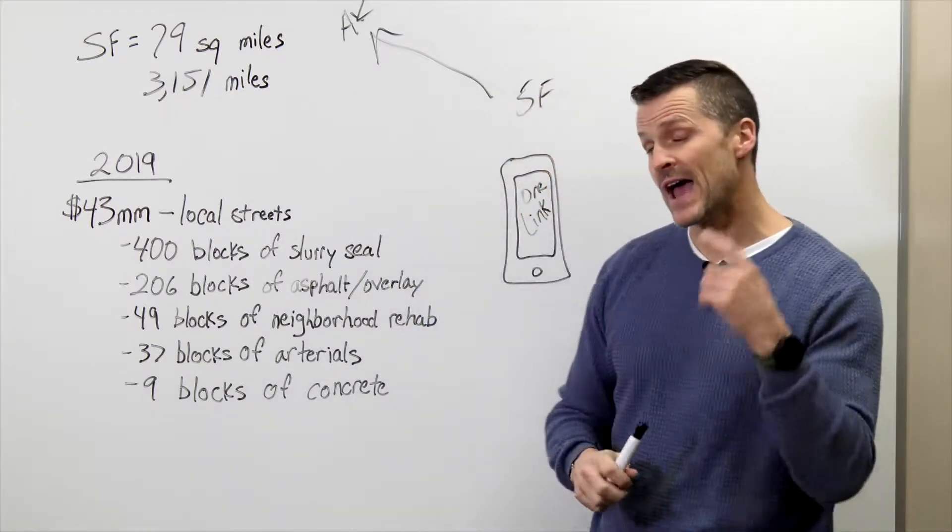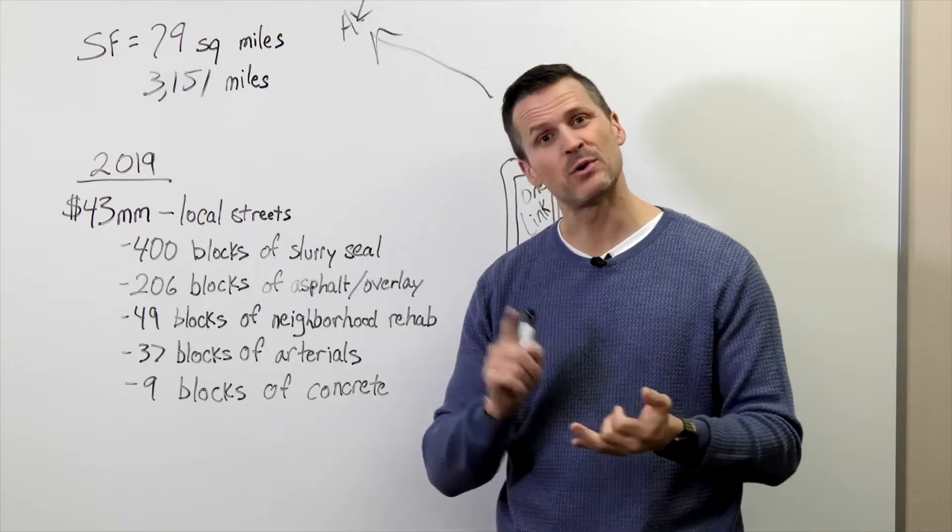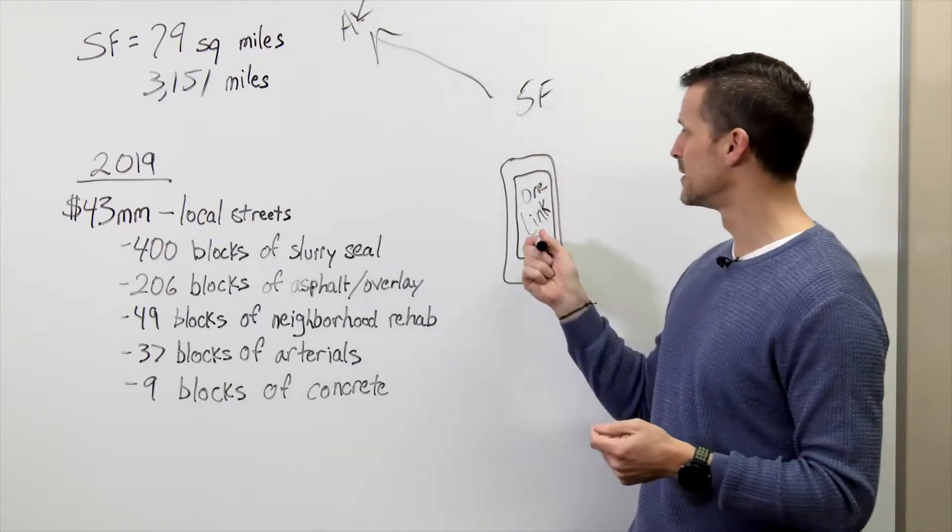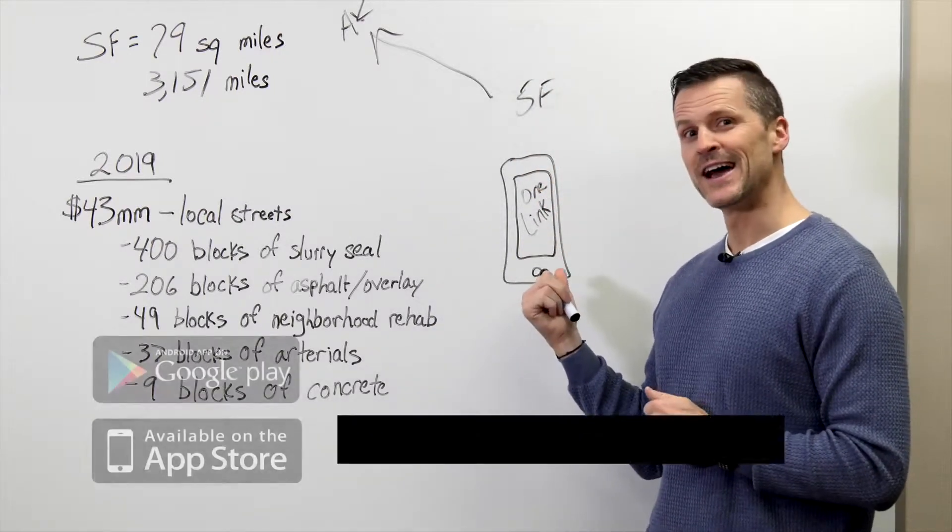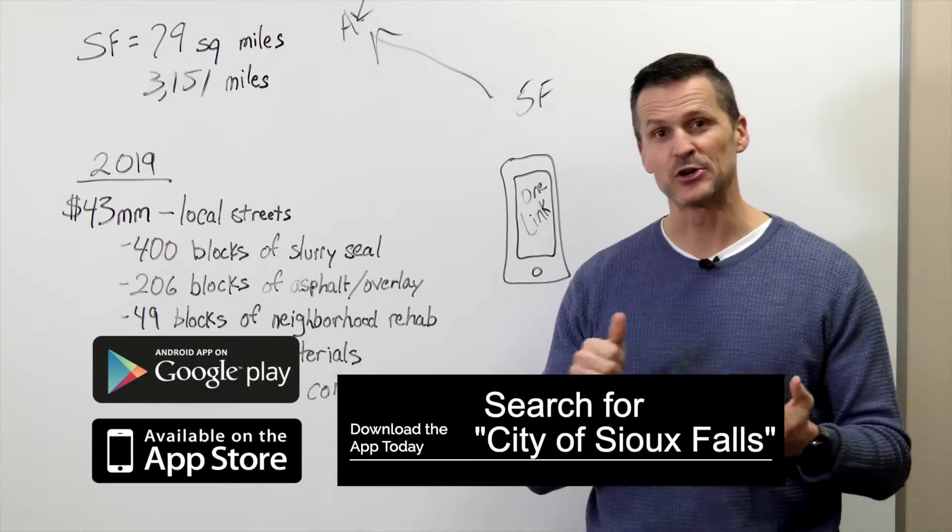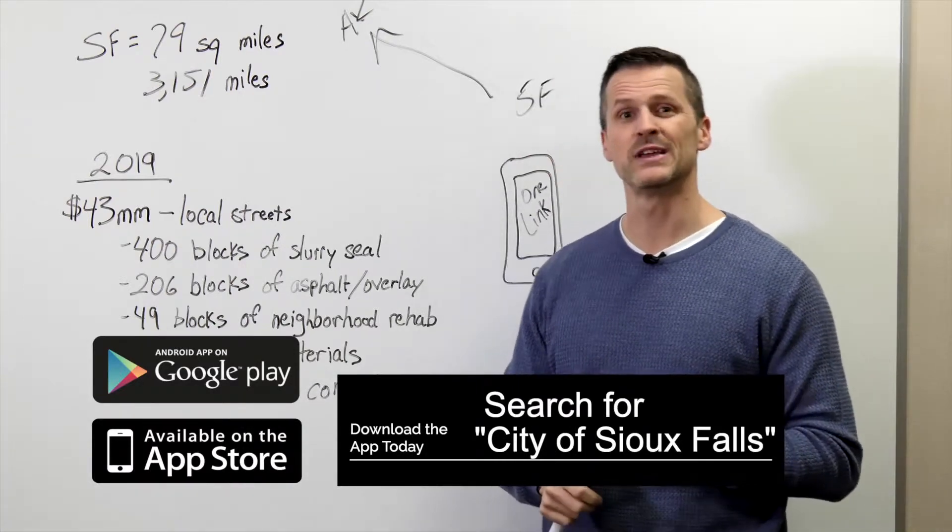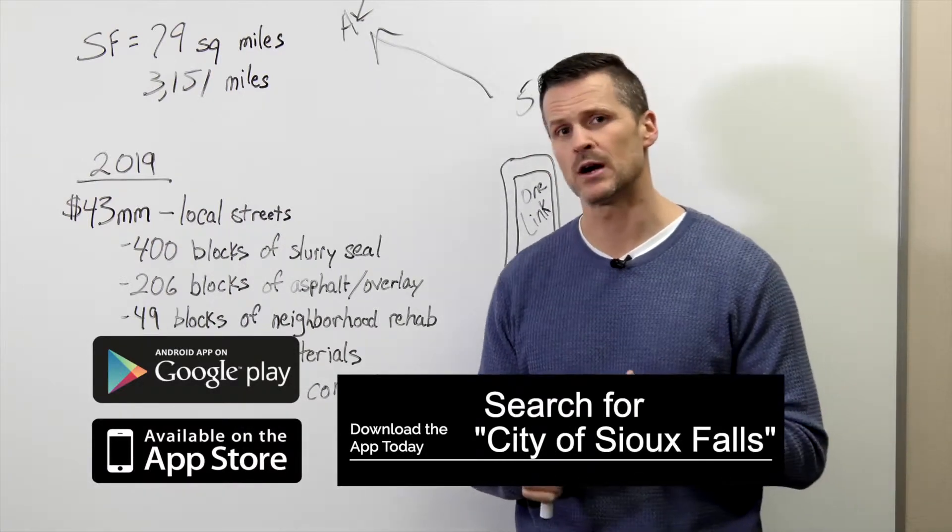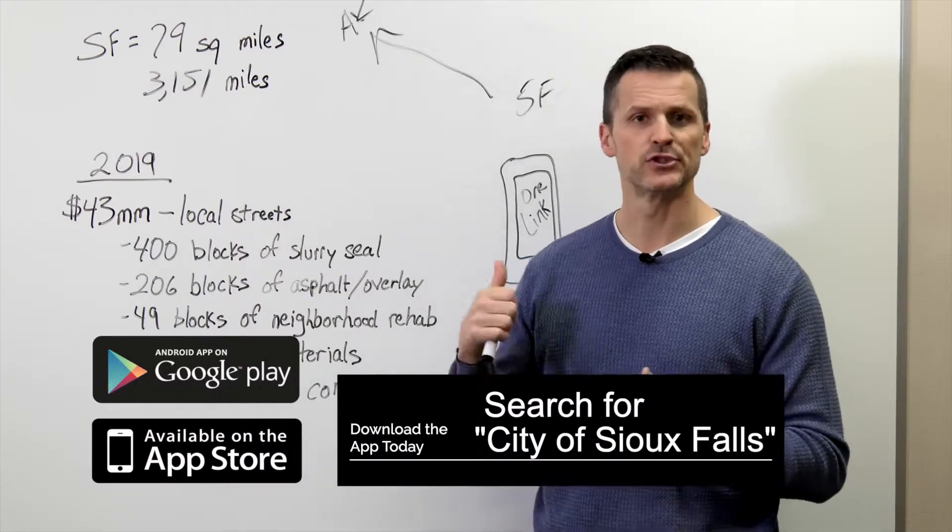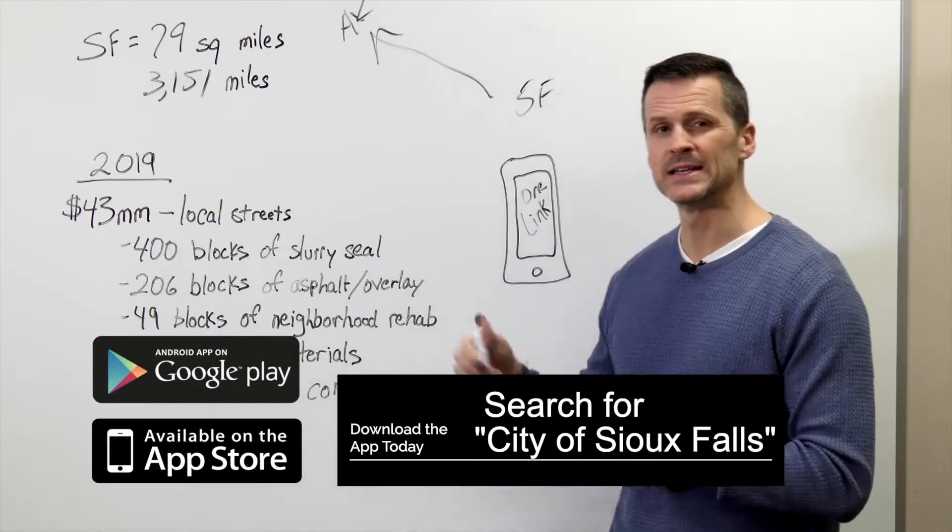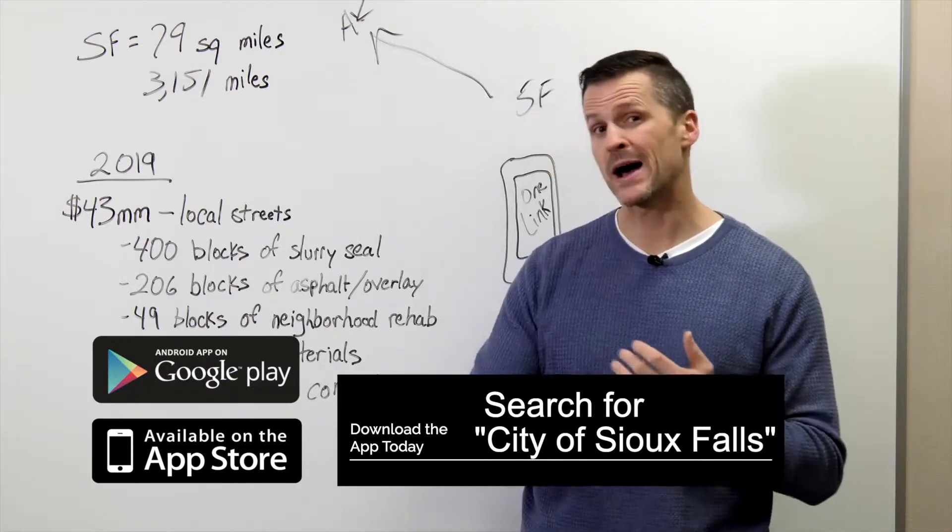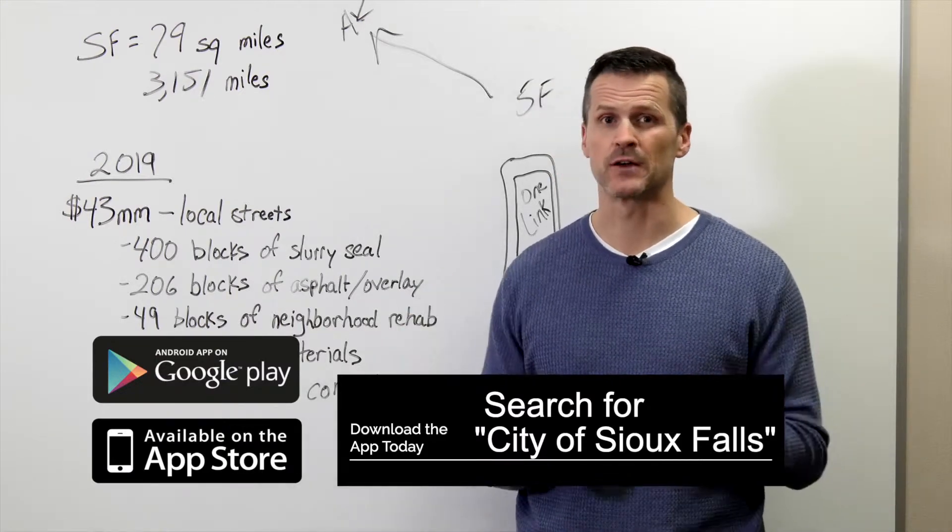So if you have a problem, you have a pothole, something you want to report on the street, I just want to remind you that you can go to the Google Play Store, you can go to the iOS store on Apple, and you can download the Sioux Falls app. Search Sioux Falls and download One Link. That's an app you can use to report potholes and report non-road stuff like street light outages, things like that.